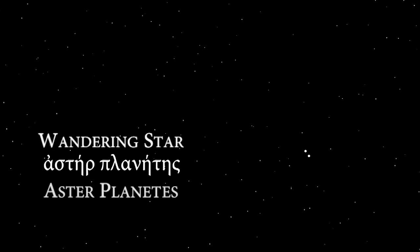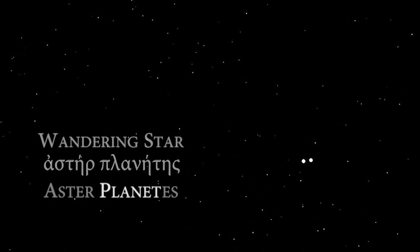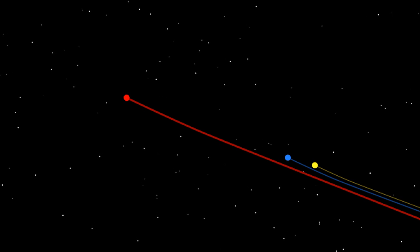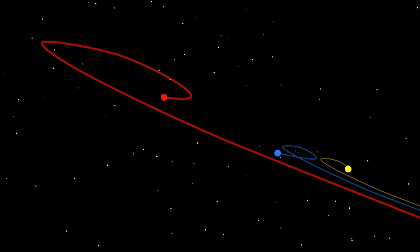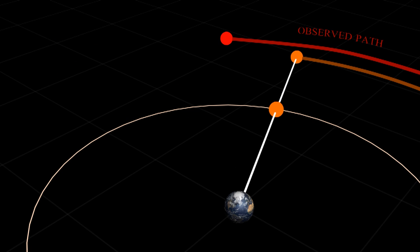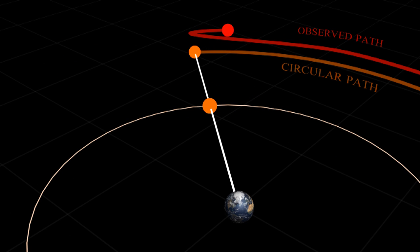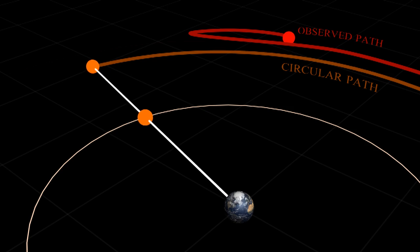The word planet comes from a Greek word meaning wandering star. The Greeks didn't know that the Earth was moving and assumed that the planets orbited the Earth, but they moved strangely. They would sometimes change directions. The planets couldn't simply be circling the Earth because how could they change directions?